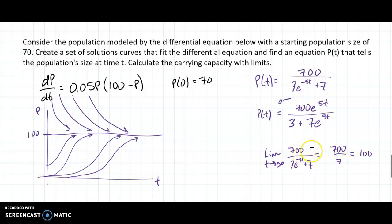To calculate the carrying capacity at t, I just do the limit as t goes to infinity of, I chose the top one, 700 over 7. It gives me 100.